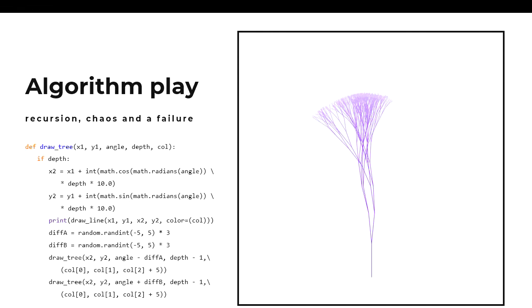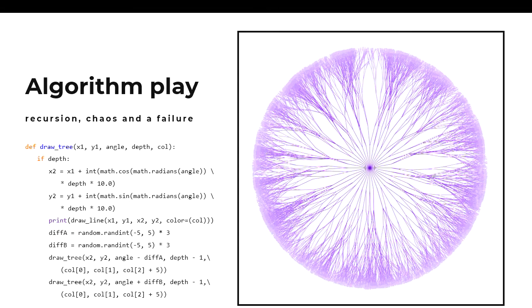Moving on to algorithms: this is a pretty straightforward tree-drawing program, with the difference that I manipulate the HSL value based on the level I'm at in the tree, so it fades towards the top. You can use all the different color systems in SVG, which is quite nice. Repeated maybe 36 times, it ends up looking like Sauron's eye or something.